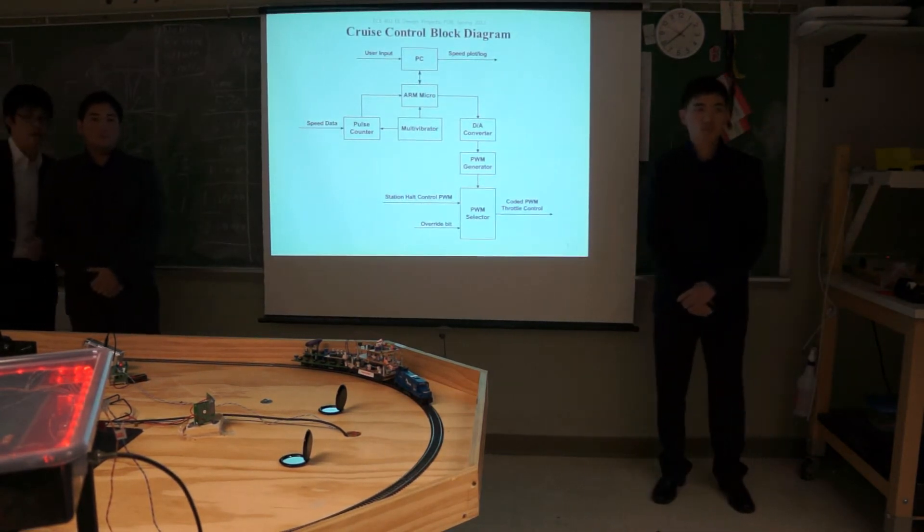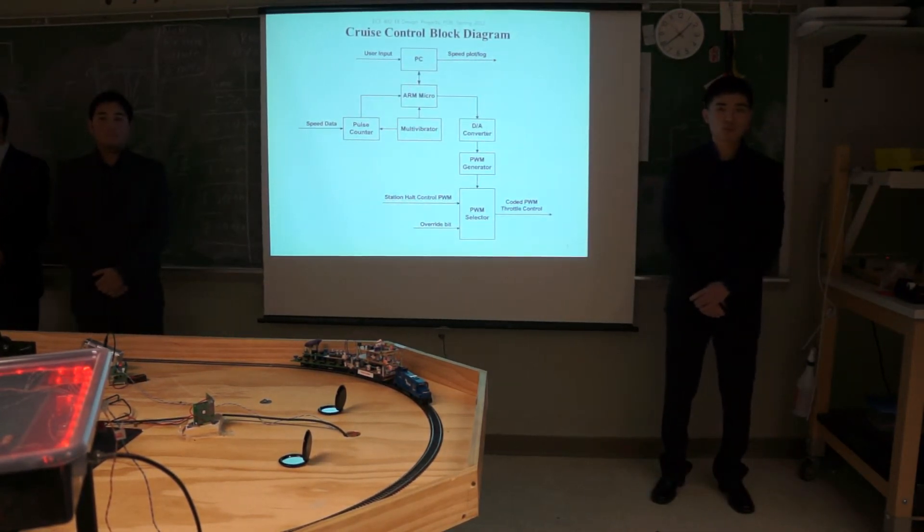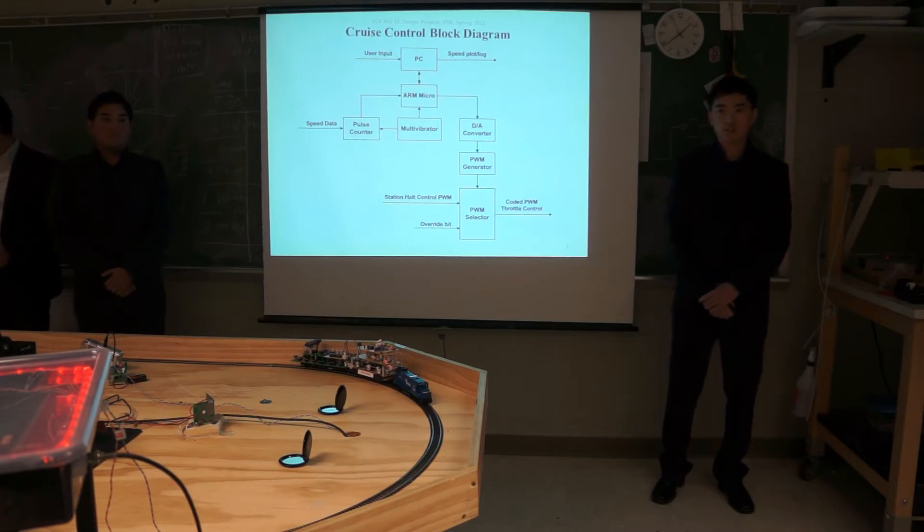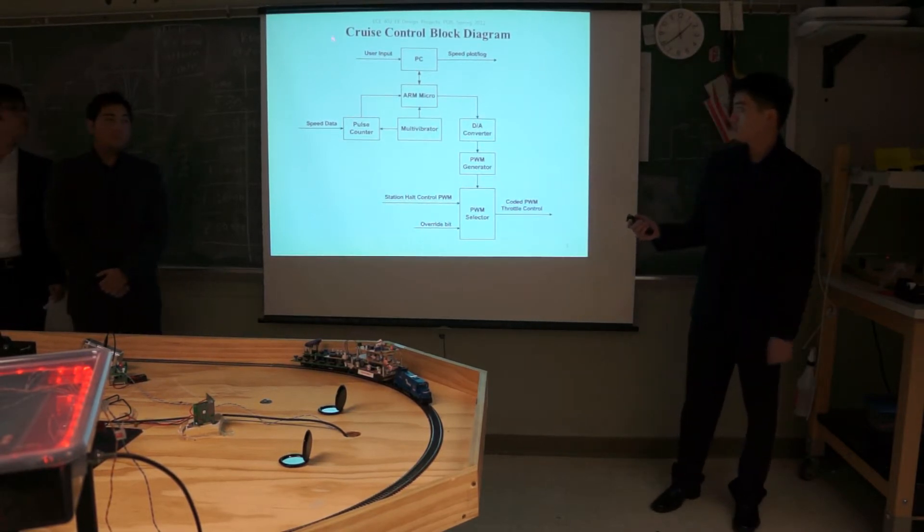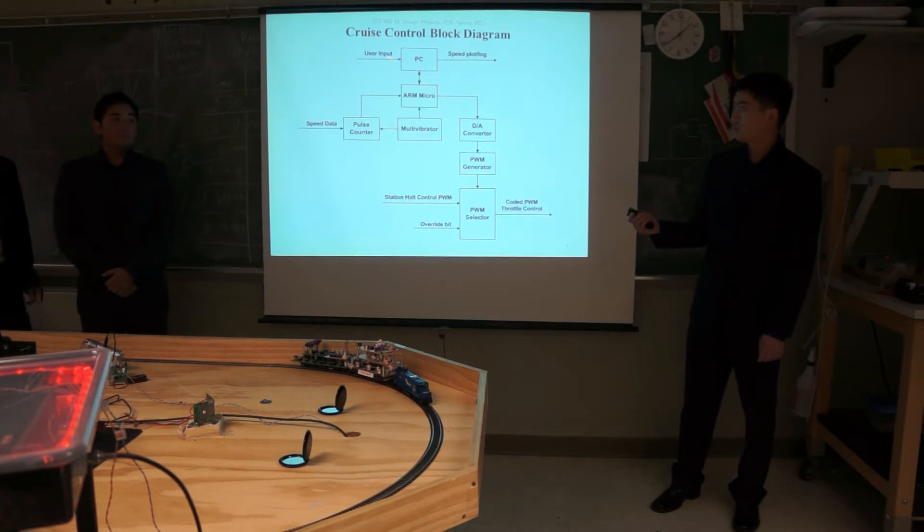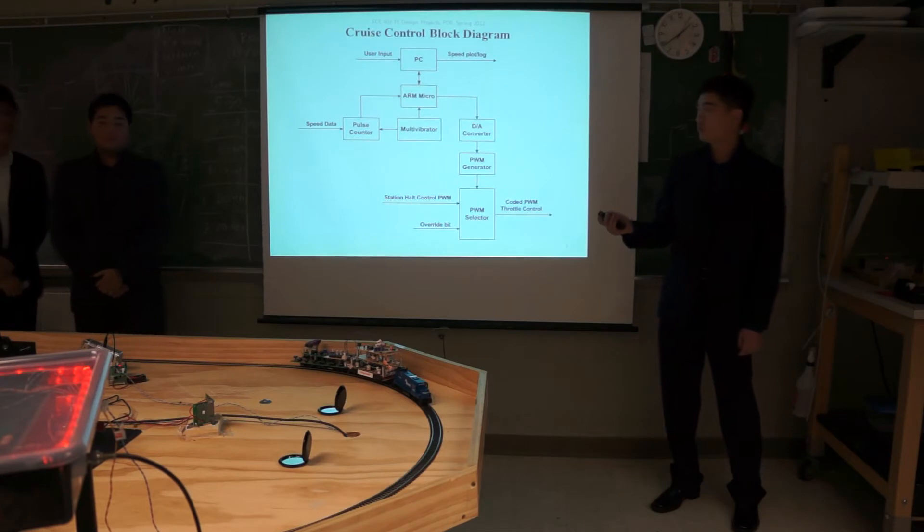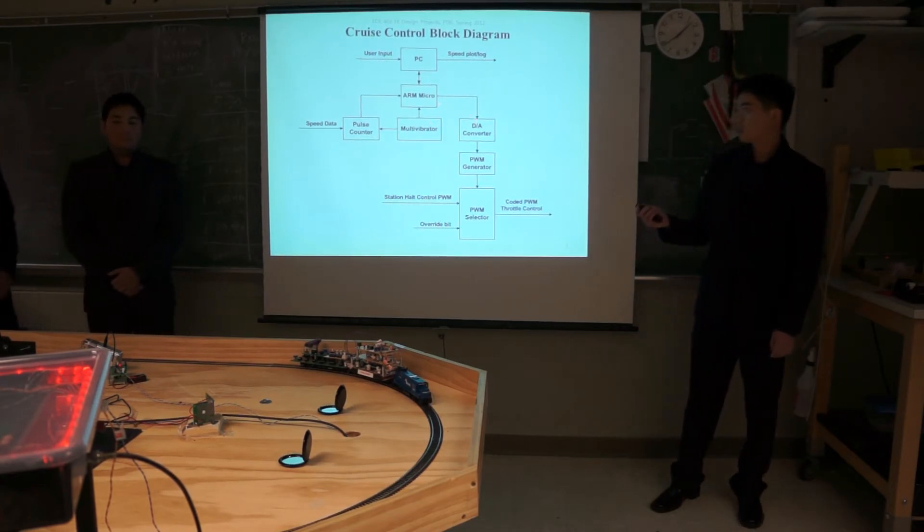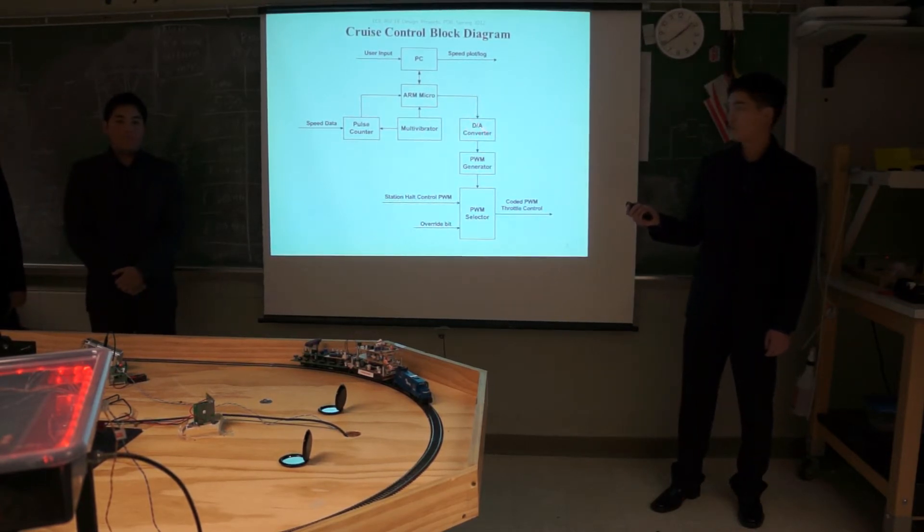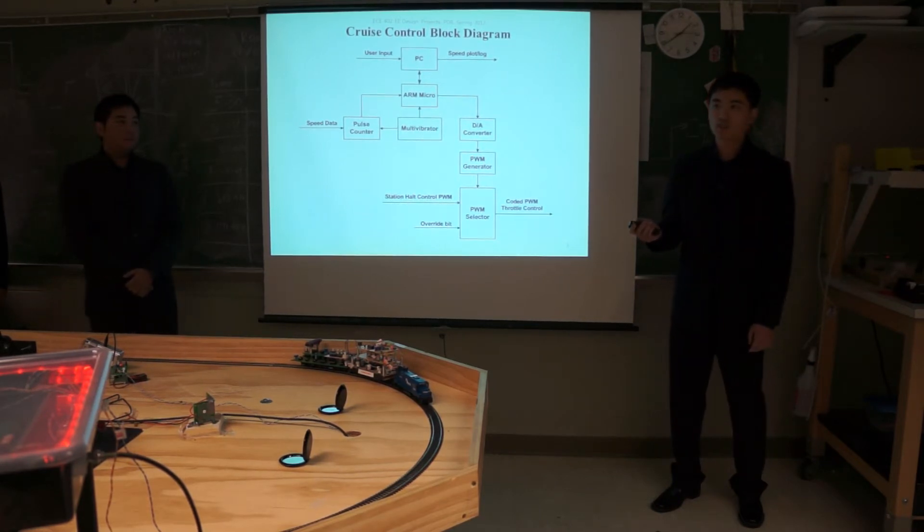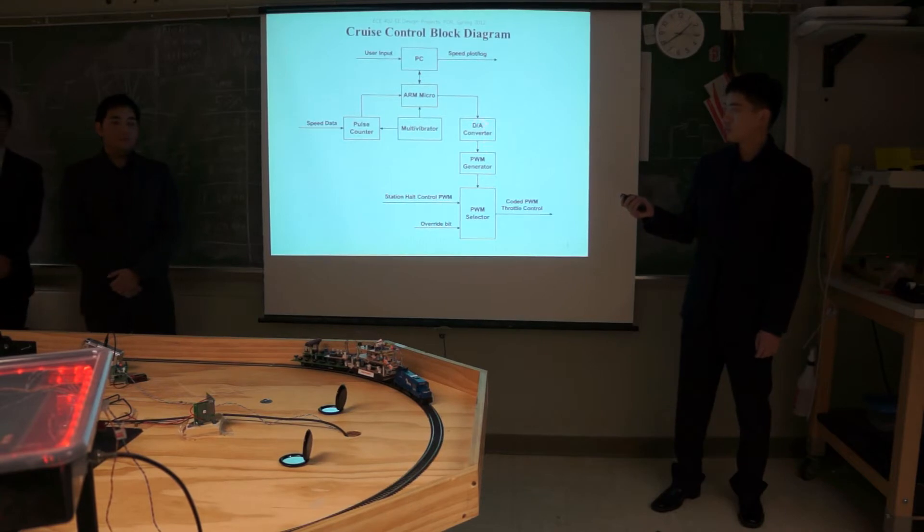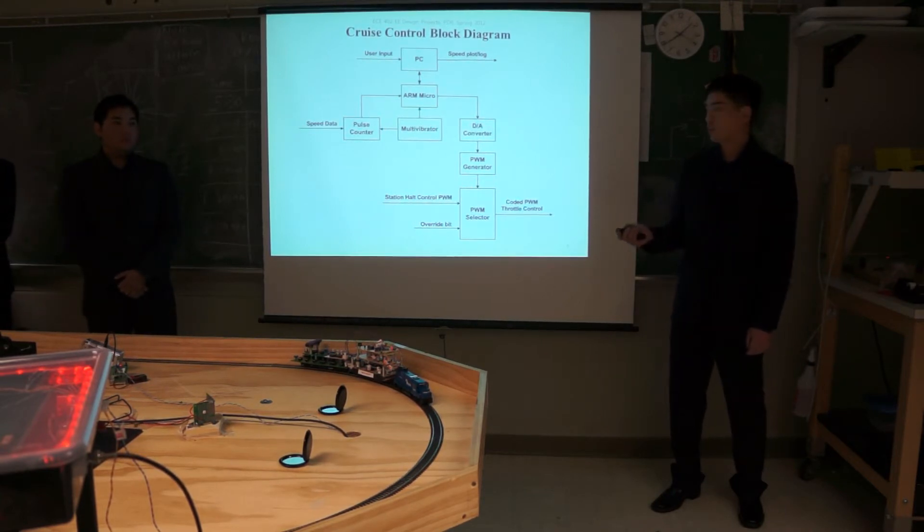The main requirement for the cruise control was for the user to be able to enter a speed and maintain the speed. Here you can see that the user can input the speed and that speed is converted into a binary value, which is then sent to a digital to analog converter. Here, in the PWM gain area, a triangle wave is compared to the output of the D2A converter and the desired PWM duty cycle is generated.